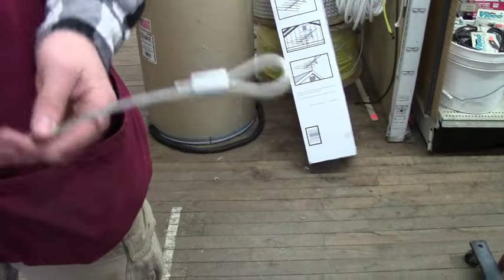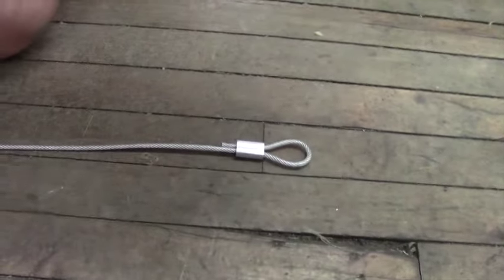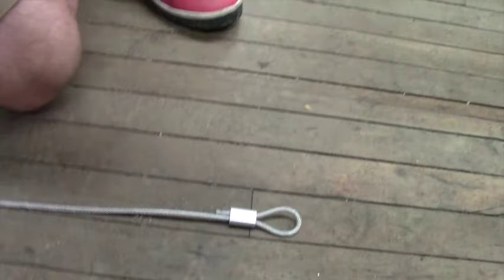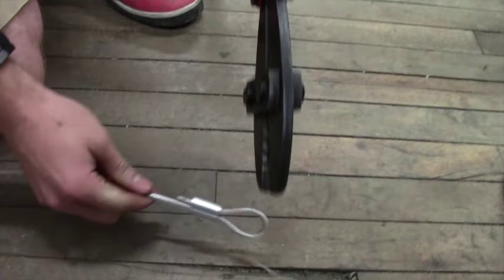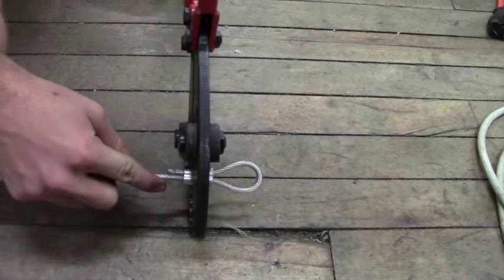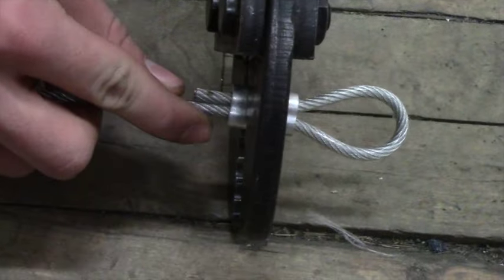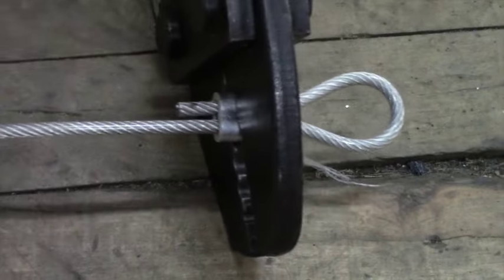Now, we're ready to crimp. We're going to put this on the ground for some leverage. I'm going to grab my crimpers. I'm going to open them up, place the crimp right in the back hole. Kind of squeeze that down, just so it won't move anywhere. And I'm going to compress it.